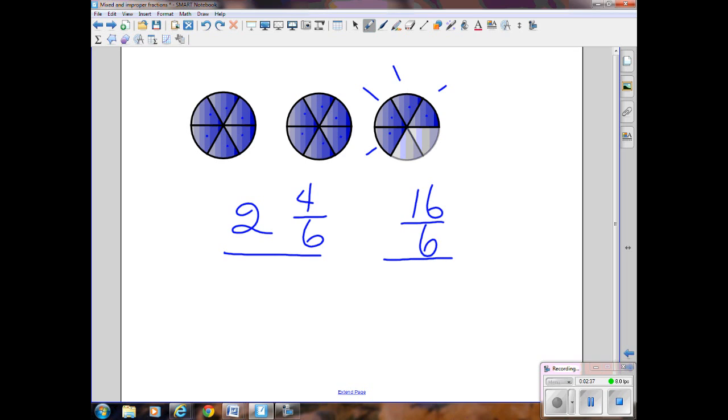Again, we know that something is more than one obviously when we're showing a whole number plus the fraction, or if we're showing it as an improper fraction, that the top number is bigger than the bottom number.